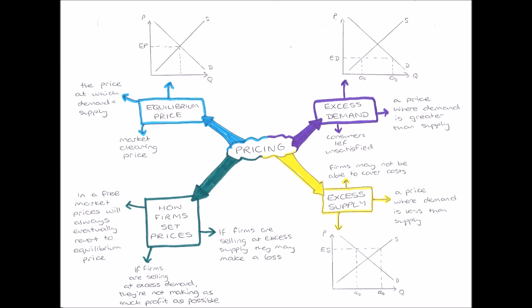Next we have excess demand. Excess demand is a price where demand is greater than supply, and this is shown on our demand and supply diagram. On the price axis — the y-axis — we have price ED, our excess demand price. Going right from that price, where it crosses the supply curve we get Qs, and where it crosses the demand curve we get Qd. The quantity demanded Qd is a greater number than the quantity supplied Qs, so demand is greater than supply.